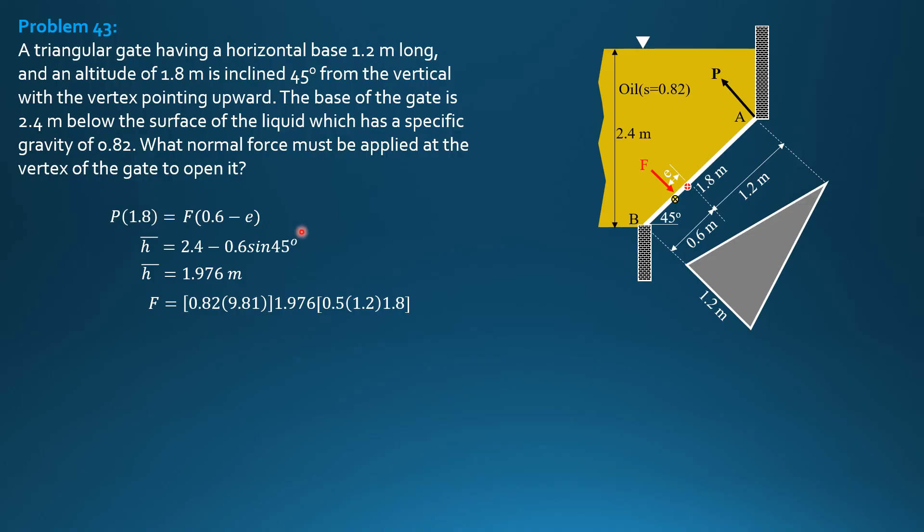Then E is height of triangle square over 18 barred H. So 1.8 square sin 45, height of triangle square sin of theta over 18 barred H. So 1.8 square sin 45 over 18 barred H, 1.976. So E is 0.06441 meters.